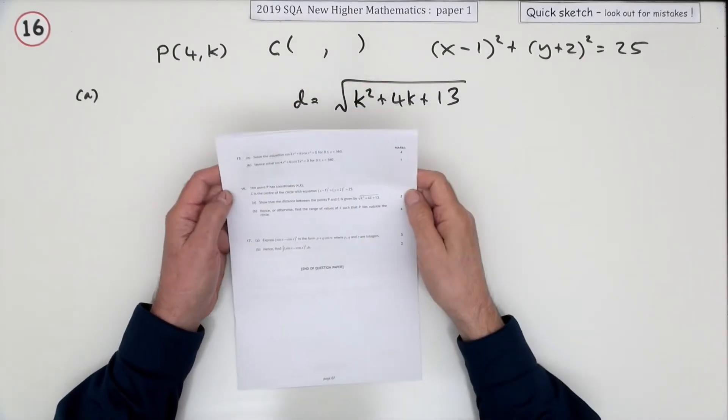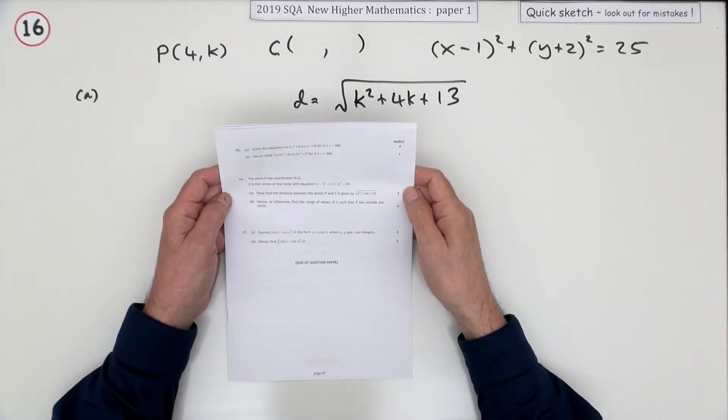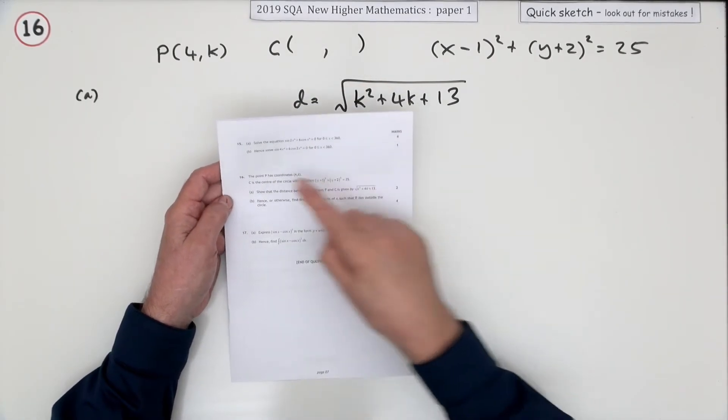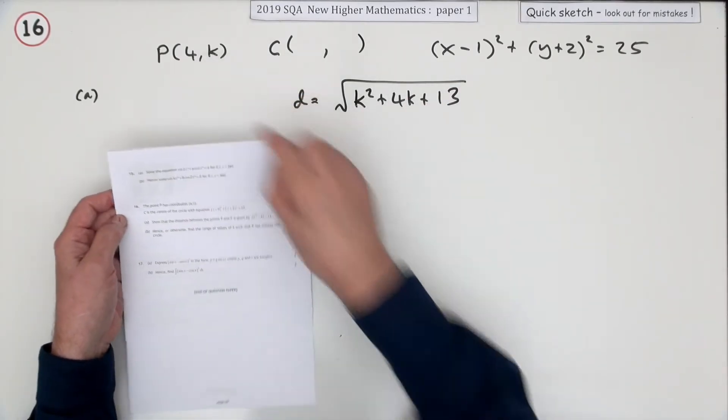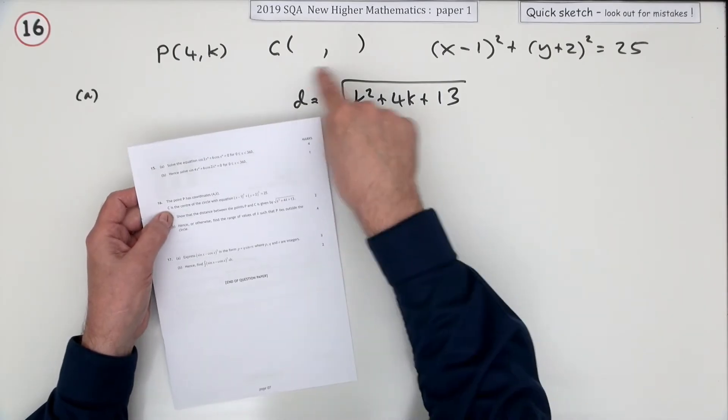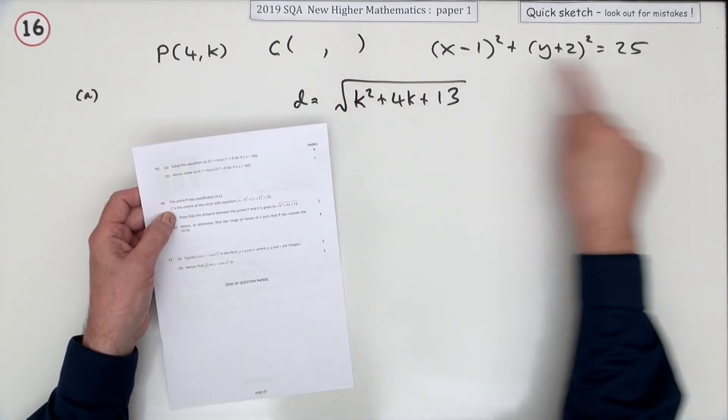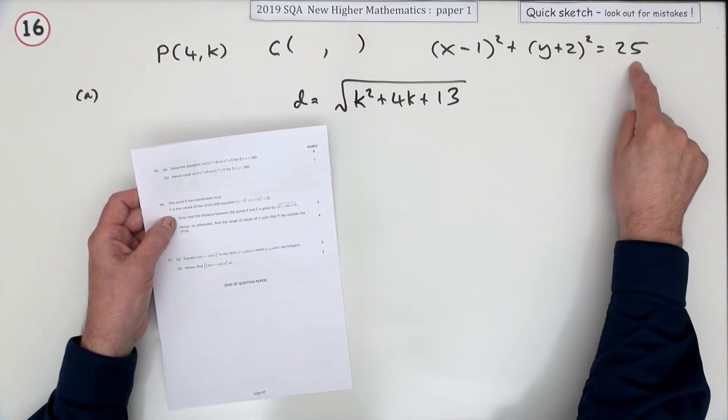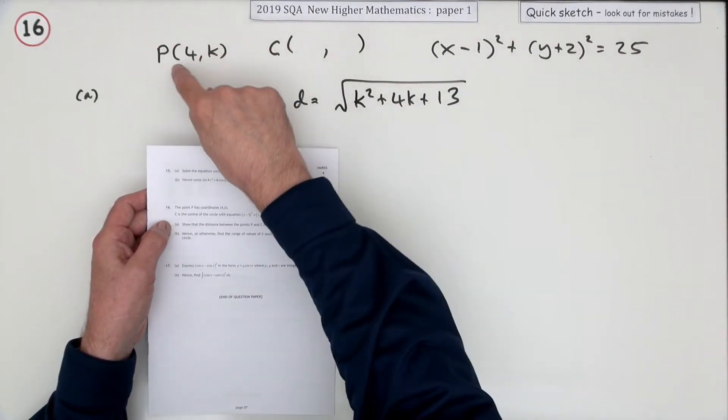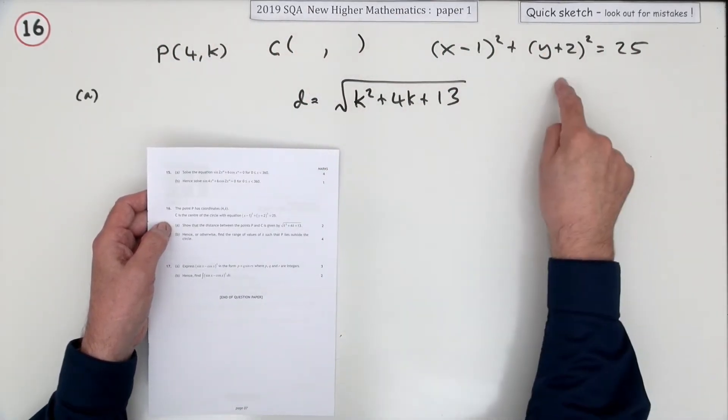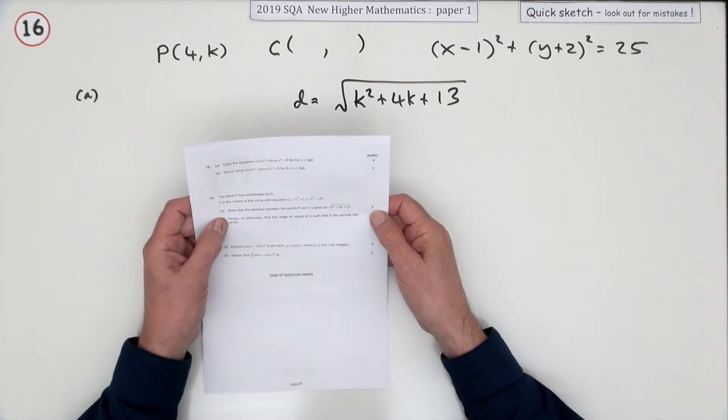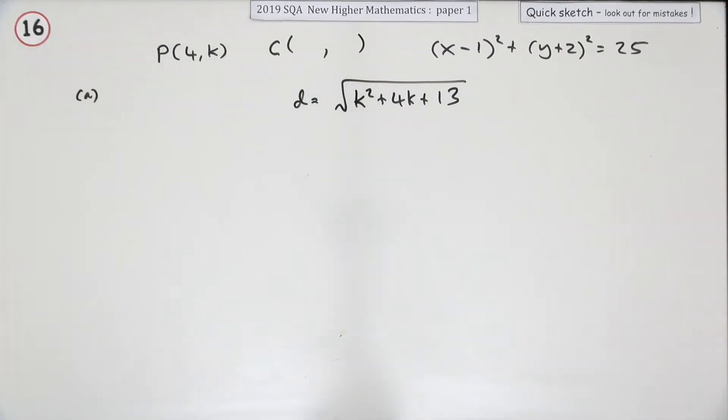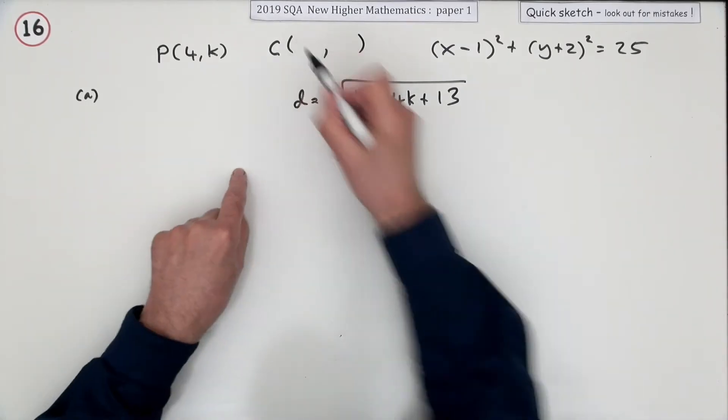Number 16 from the 2019 Higher Maths paper 1, six marks, points and circles. You're given a point P(4,K), C is the center of this circle with this given equation. You have to show that the distance of this point from the center of that circle is given by this expression, so at least you know you're going to get the right answer if you get there. First part: what's the center of